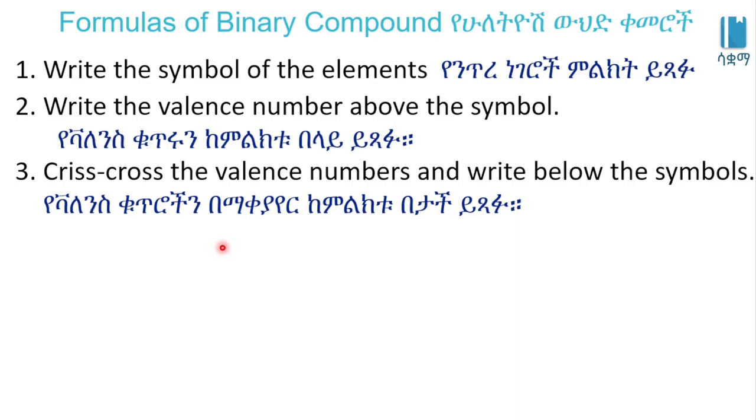For example, calcium plus chlorine. For a binary compound we use the formula. Calcium is represented as Ca and chlorine as Cl. This is Ca and Cl is the right way.